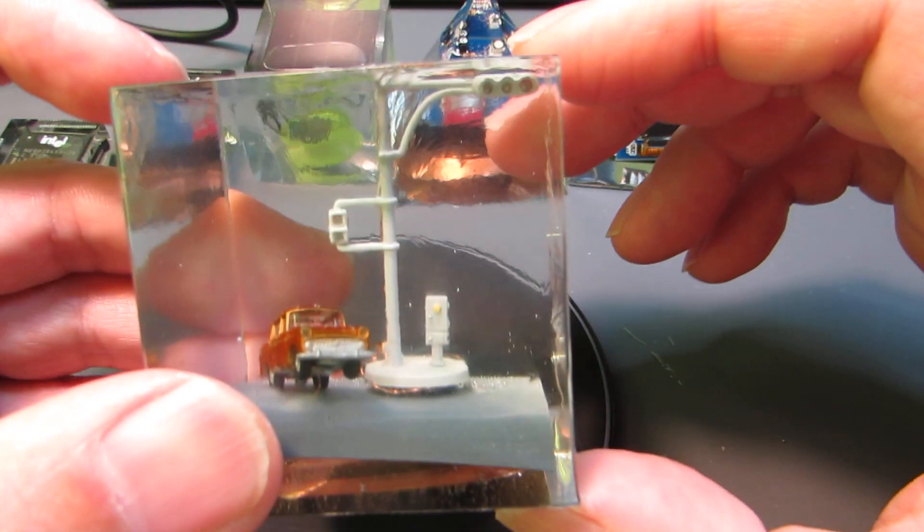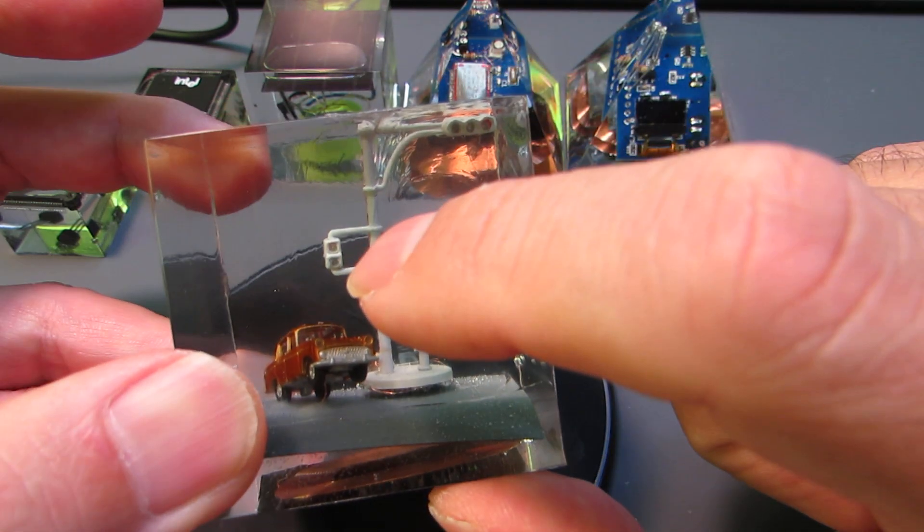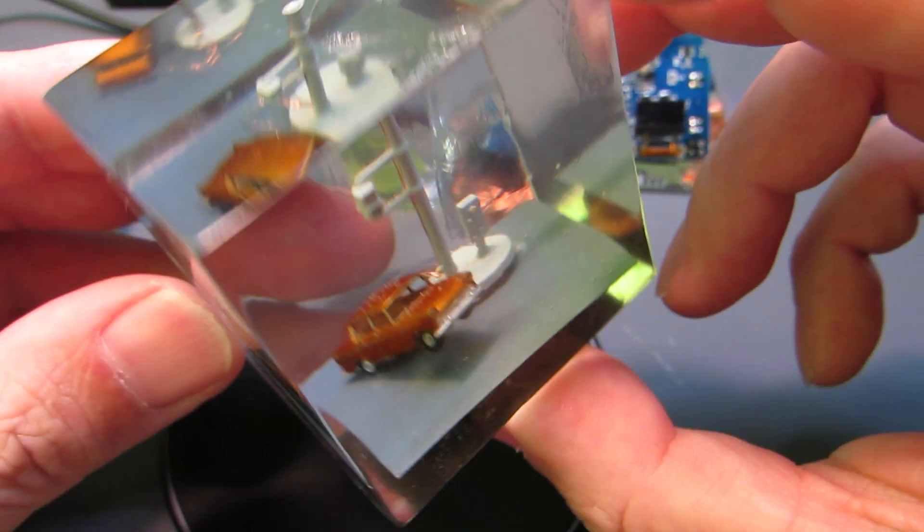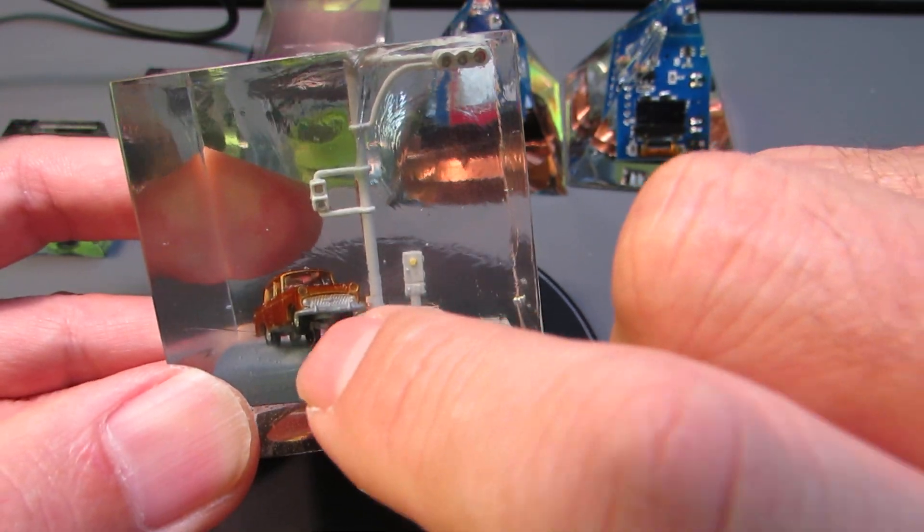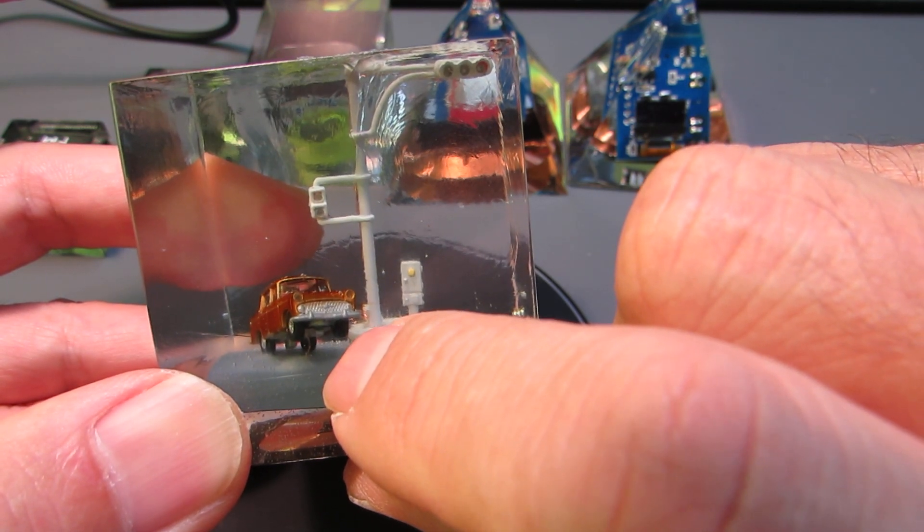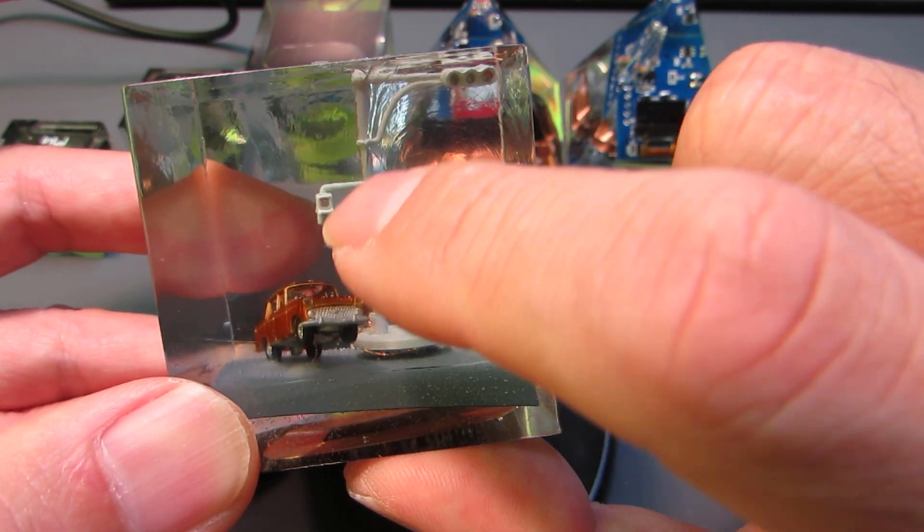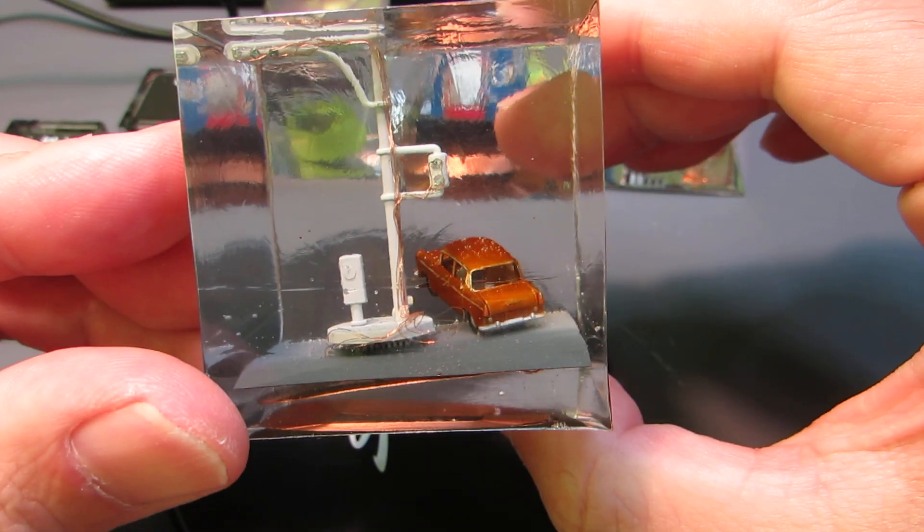This is another one, including a small traffic signal, pavement signal, and a small car. As you see, small models. For the headlight for the small car, I put a very tiny LED, the size of 1005, 1mm length and 0.5mm width. And also each of the signals, I also put very tiny LEDs.